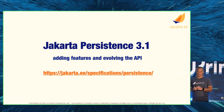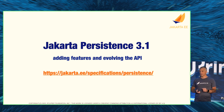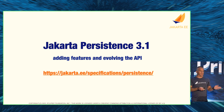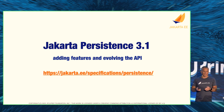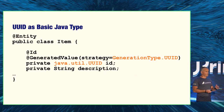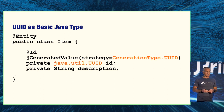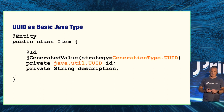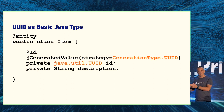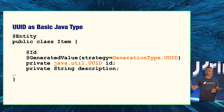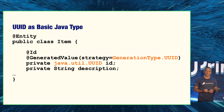Another specification updated with a minor release for Jakarta EE 10 is persistence — you may know it as JPA, but it's now called Jakarta Persistence. One neat feature that has been requested for a while is UUIDs as basic Java types. You can now use UUIDs directly in your entities without mapping them yourself using the UUID class; the implementation handles it for you.